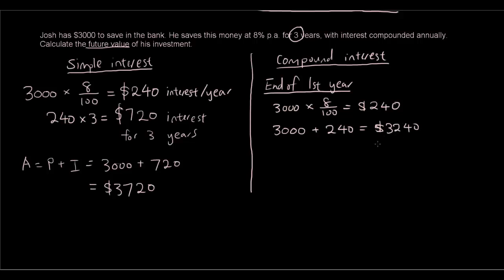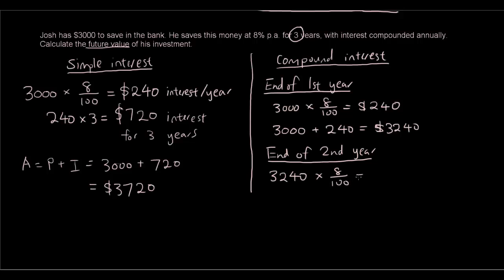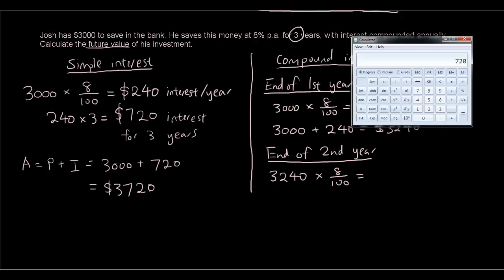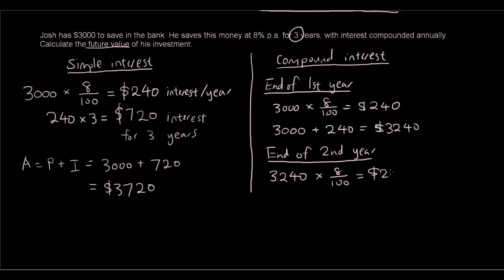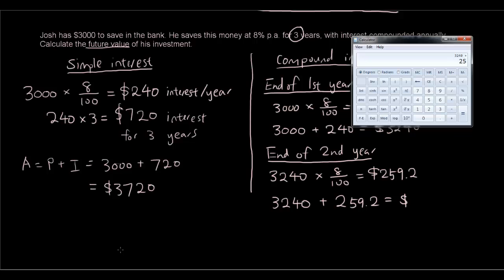Now that is the new principal. At the end of the second year, when we calculate the 8% interest, we are going to use $3,240 as our new principal and find 8% of that. So $3,240 times 8% is $259.20. Our principal was $3,240, add the new interest of $259.20, and we get $3,499.20.